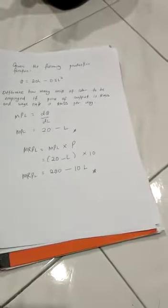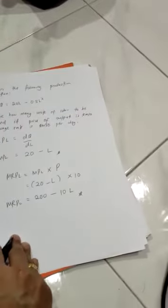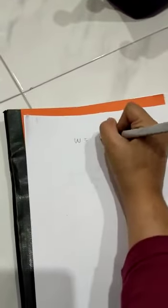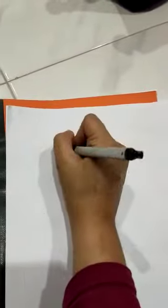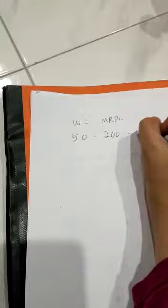Now we find the efficient condition for employment of labor. Wage equals MRPL. The wage was 50, and MRPL was 200 minus 10L. So we have 50 = 200 - 10L.